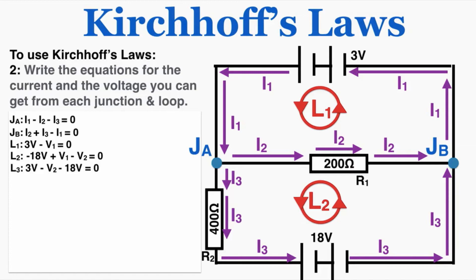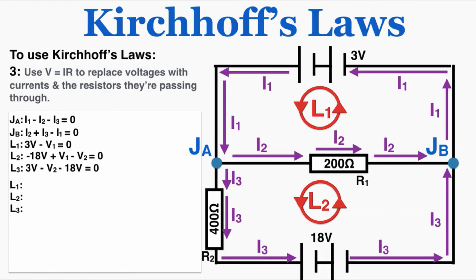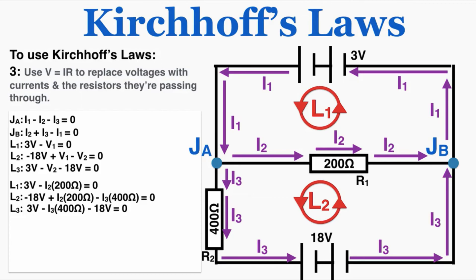Step 3: use V = IR to replace voltages with currents and the resistors they pass through. We ultimately want the values of I1, I2, I3, V1, and V2. So I replace each voltage in the loop equations with the specific current times the resistance for that element, since V = IR. Each individual voltage equals the current through that resistor times its resistance.